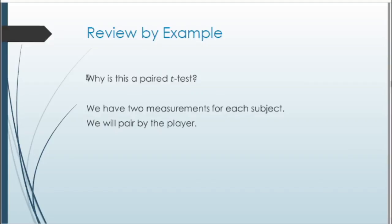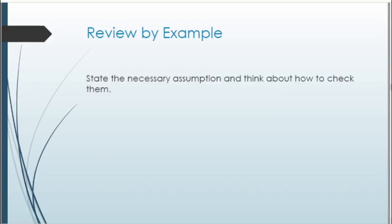This is a paired t-test because each batter has two different measurements — their nighttime batting average and their daytime batting average. Each observation is paired by the player, which is why this is specifically a paired t-test.